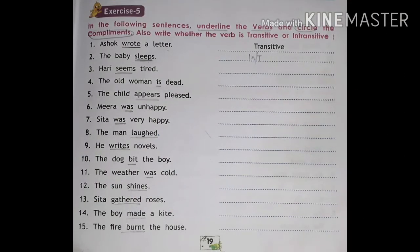Exercise number 5. In the following sentences, underline the verbs and circle the complements. So we underline the verb and circle the complements. Also write whether the verb is transitive or intransitive. There are two types of verb — transitive and intransitive — and we have to identify each.